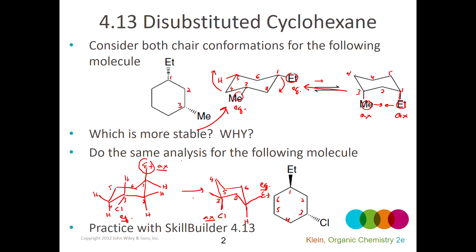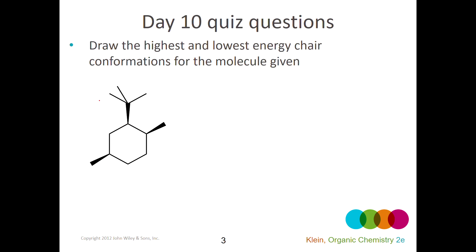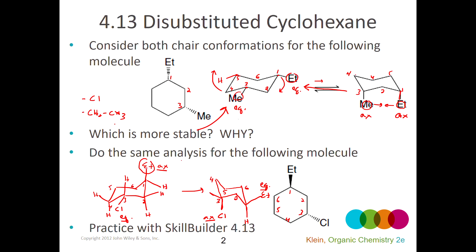No matter what I do, I've got one axial group and one equatorial group. The more stable version depends on the bulkiness of those groups — which has a larger electron cloud to repel the other axial groups. I want to avoid the larger group in an axial position. An ethyl group is a CH2 bonded to a CH3, while a chloro group is just a chlorine. The ethyl group is more crowded — it has multiple hydrogens on multiple carbons, taking up more space. So the more stable version avoids the ethyl group being axial; the equilibrium will favor the other side.